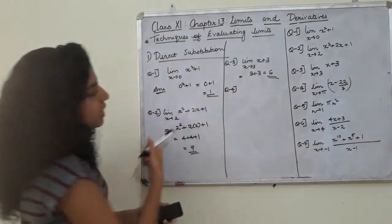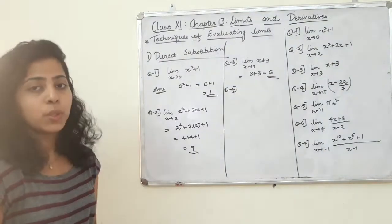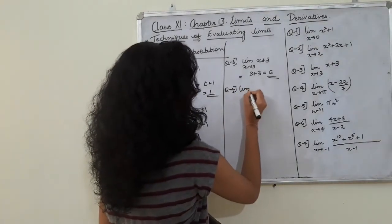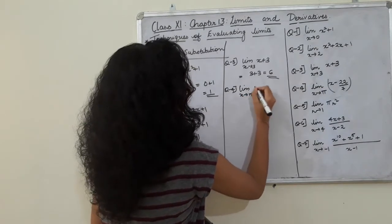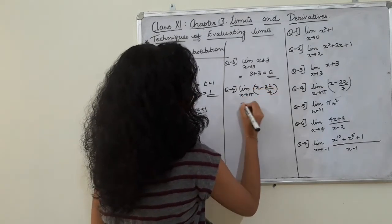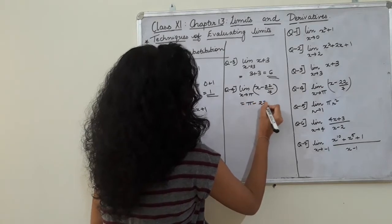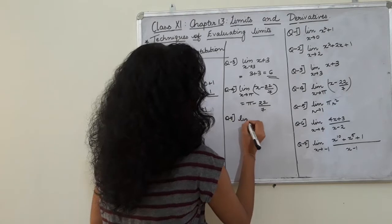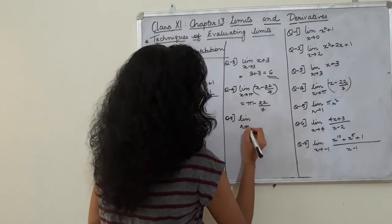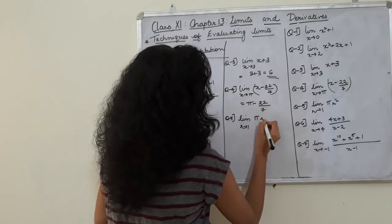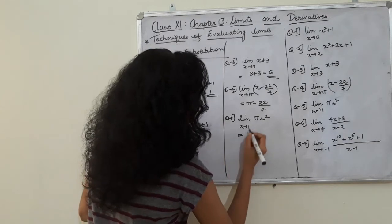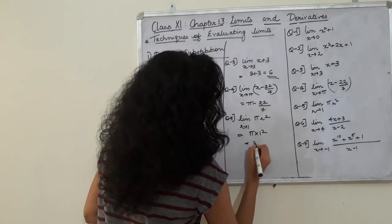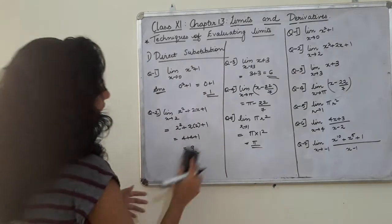Direct substitution — limit as x tends to π of x minus 22/7: substituting gives π minus 22/7. Next: limit as r tends to 1 of π r squared — substituting r = 1 gives π times 1 squared, which equals π.